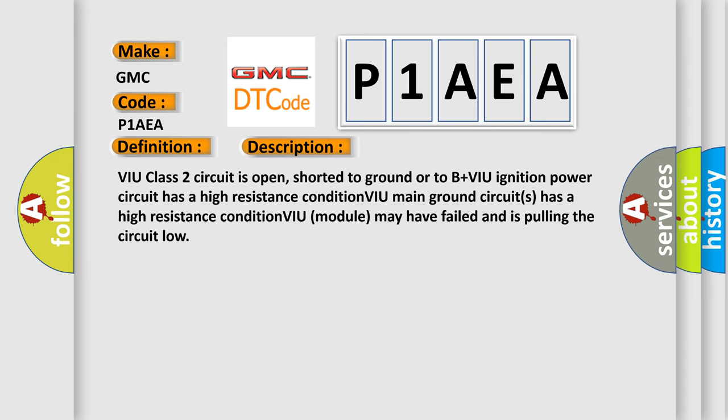VIU Class 2 circuit is open, shorted to ground or to B+. VIU Ignition Power Circuit has a high resistance condition. VIU Main Ground Circuits has a high resistance condition. VIU Module may have failed and is pulling the circuit low.